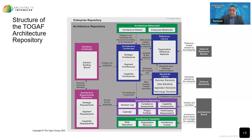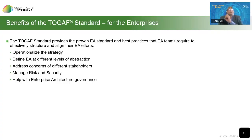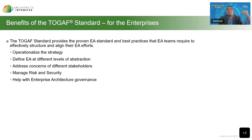Moving forward, let's look at the benefits that the TOGAF standard provides for enterprises. Enterprises of all sizes across different industries use the TOGAF standard and its set of best practices that their EA teams require to effectively structure and align their enterprise architectural efforts. Here are some of the benefits it brings to the table: it helps organizations to operationalize their strategy, defines the enterprise architecture at different levels of granularity, helps address concerns of different stakeholders at different levels, and helps them manage risk, security, and enterprise architecture governance.